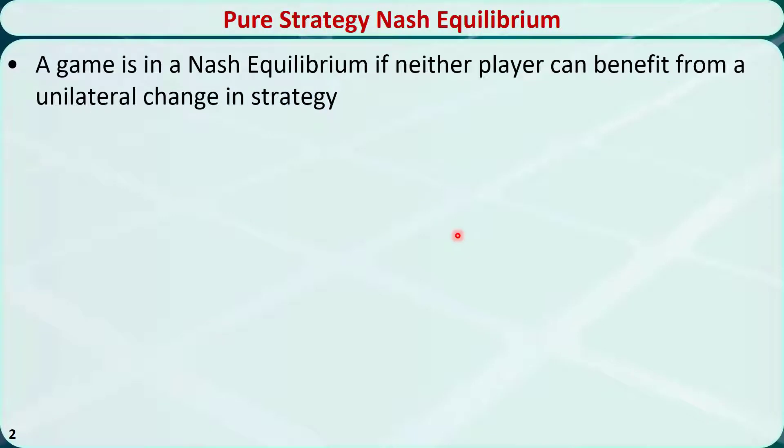In the payoff matrix, a Nash equilibrium is a cell that represents the strategies neither player would deviate from. There is an easy numeric method to identify a Nash equilibrium for a two-person game.